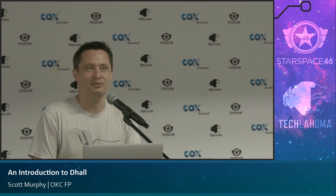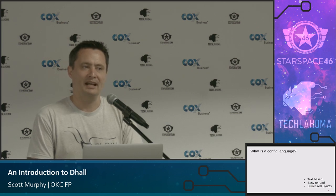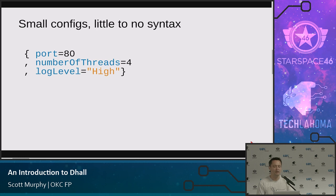So a config language — I guess text-based seems kind of silly, since all languages are text-based, but what I meant by that is it's not going to have things like a binary representation. The script is the language and it's all together. They're going to be easy to read — you want something that people can open up and look at — and then a structured syntax, something that makes sense. So as an example, small configs should have little to no syntax. If you're doing something simple with a config language, you want it to be simple and very legible. There's a port and some threads and maybe some sort of logging — so an initial state of a system.